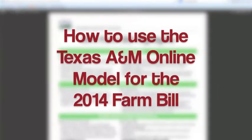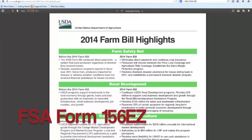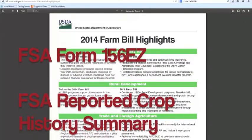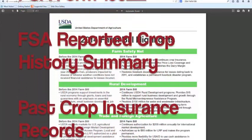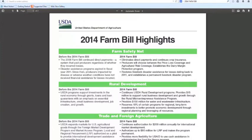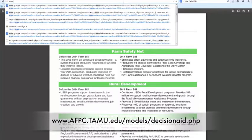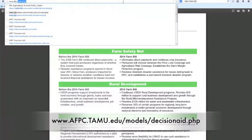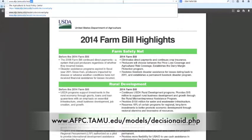Welcome to our tutorial on how to use the Texas A&M online model for the 2014 Farm Bill. To use this decision aid, you may need your FSA Form 156-EZ, FSA Reported Crop History Summary, and past crop insurance records. To get started, please go to the web address www.afpc.tamu.edu/models/decisionaid.php.